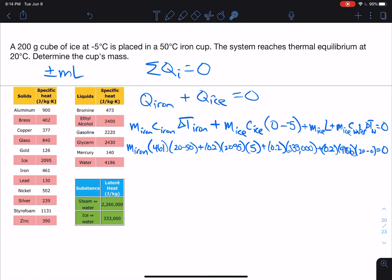So that got a little messy there, but this is 4,186, the specific heat of water. And at this point, just go ahead and crunch the numbers. So that's going to be 461 times negative 30, so this is going to be negative 13,830 times the mass of iron. This is 2,095 plus 66,600 plus 16,744. That's going to be 85,439. That all equals 0.